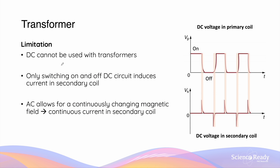It's worth mentioning that a limitation of transformers is that they cannot be used with a DC power supply — DC standing for direct current, which is what batteries typically produce. Although switching on and off a DC power supply will produce a change in magnetic flux, which will induce EMF and current in the secondary coil, this will only produce current that lasts momentarily. When the voltage in the primary coil goes from on to off, we have a decrease in flux, which induces EMF in the secondary coil. But as soon as the voltage becomes and remains zero, there is no longer a change in flux, and therefore there will be no EMF or voltage in the secondary coil.